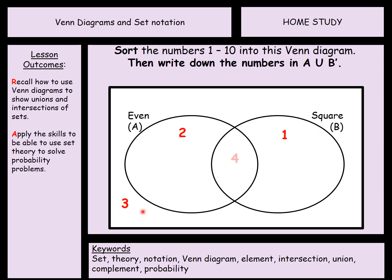4 is both even and square, so goes in the crossover section. 5, neither even or square. 6 is even but not square. 7 is not even and not square. 8 is even but not square. 9 is square but not even and 10 is even but not square.